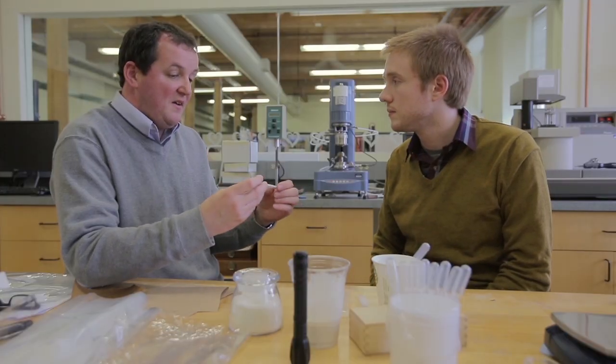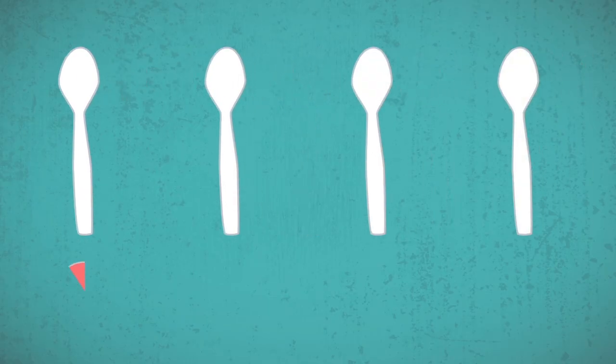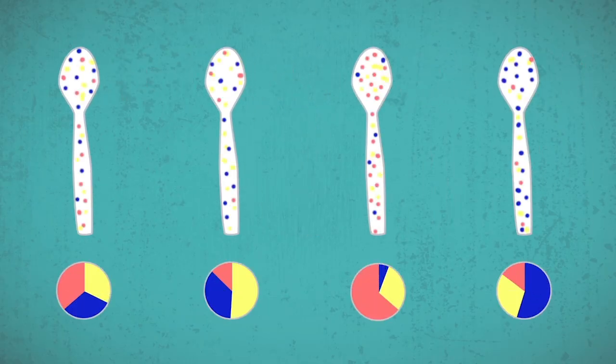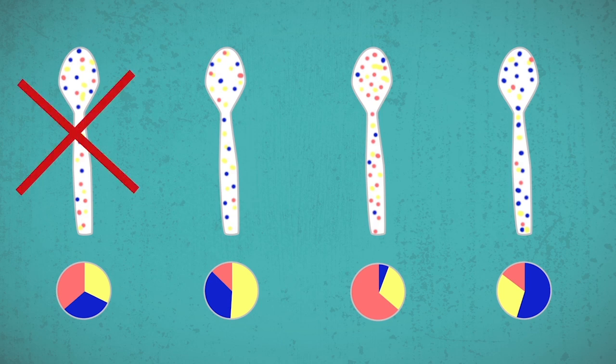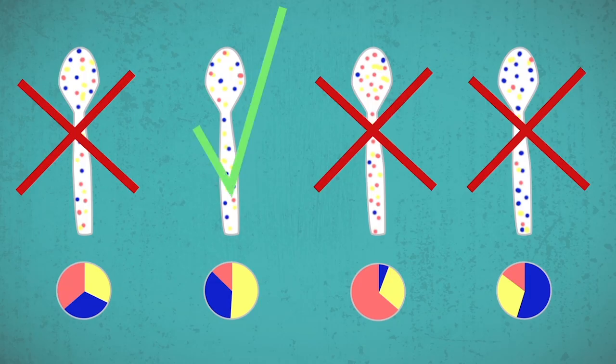And then we also have to take into account the process of how this is going to be made. And then we will make that spoon out of a range of different materials which will be close to the finished article. And we look at the range of samples that we make and decide which one is the best, the closest to what our customer is going to need.